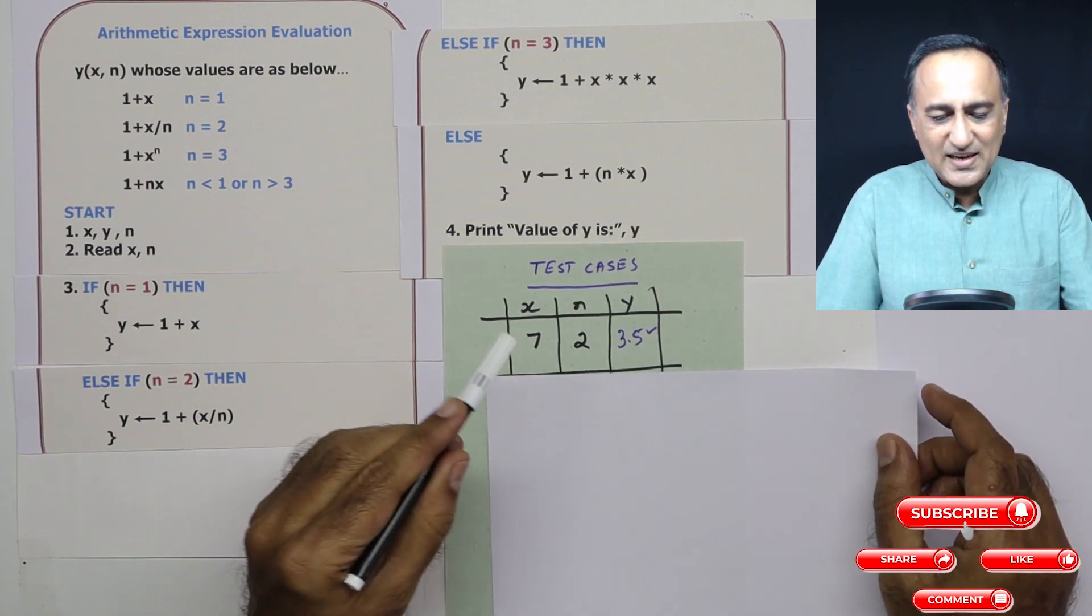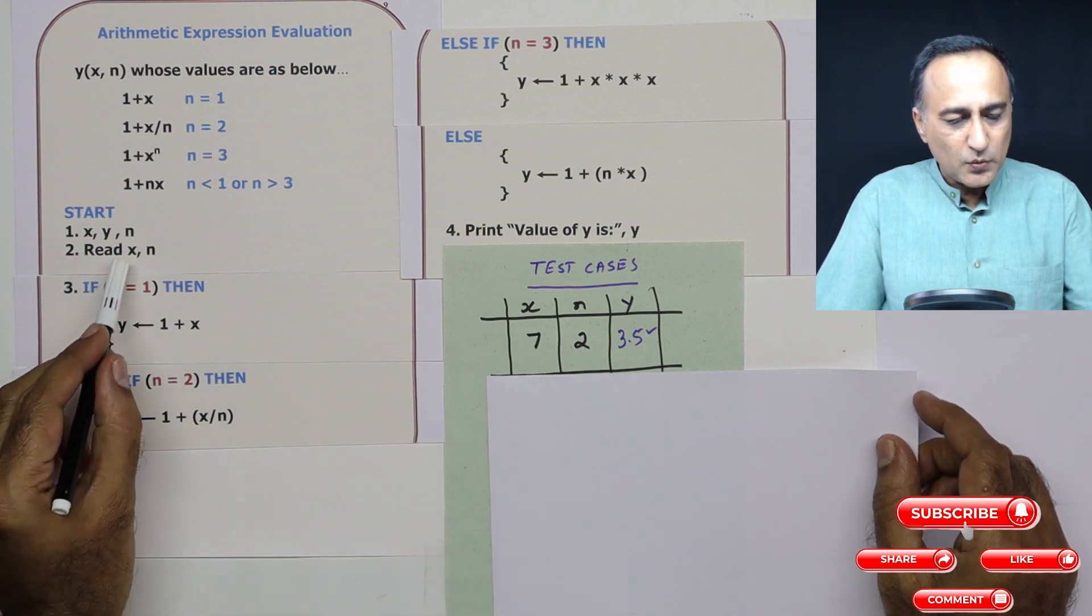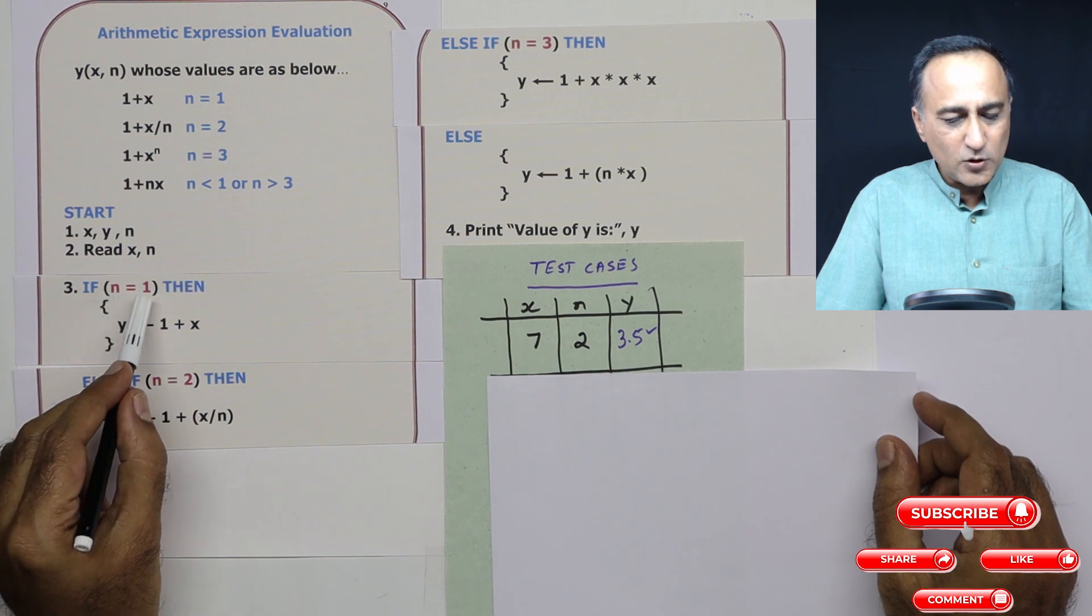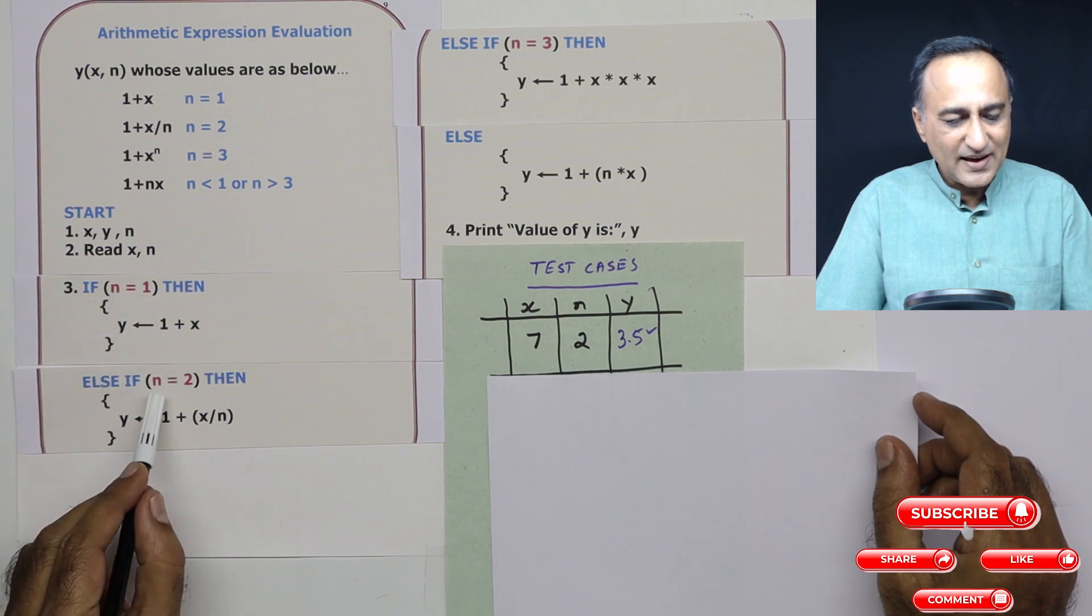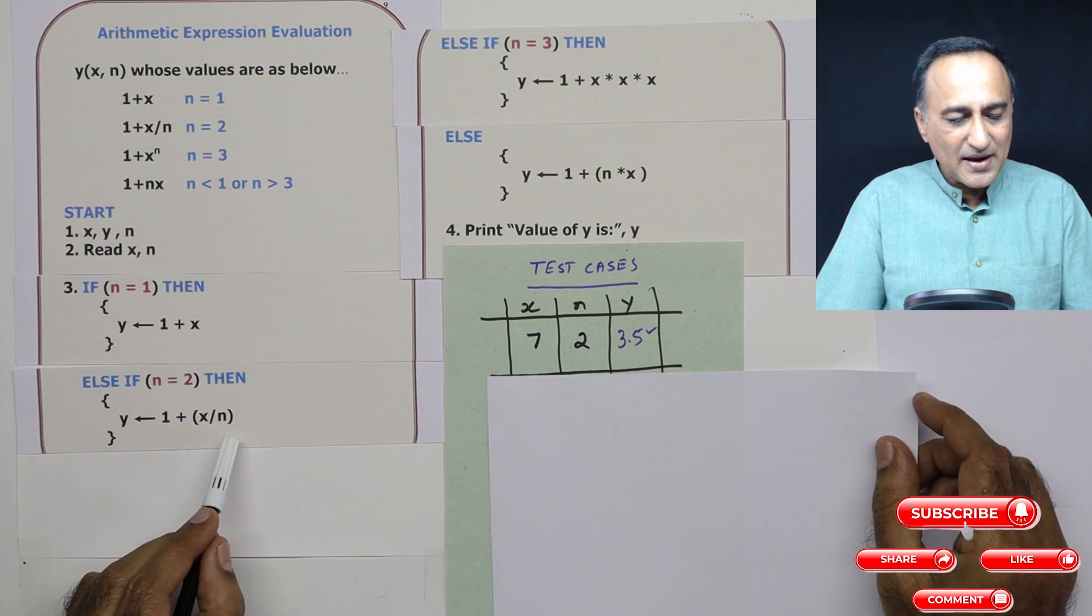So what we will do is let's say x is 7 and n is 2. So we read x is 7, n is 2. Is n equal to 1? This is false. Else if n equal to 2, this is true. So y is 1 plus x by n.